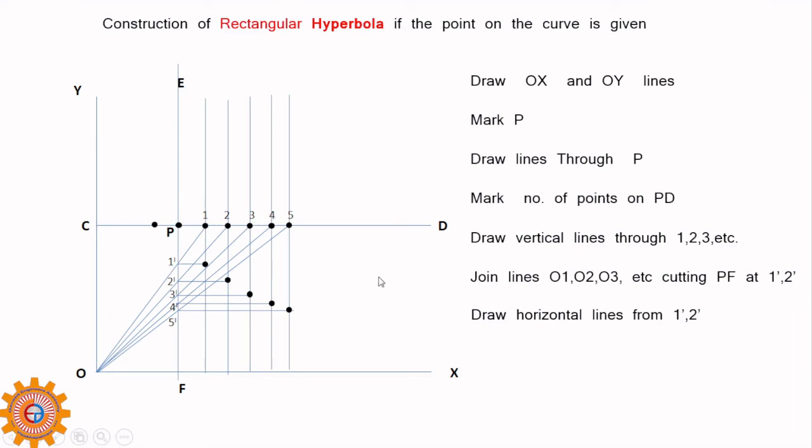I have taken extra point 6 and I have extended that, that will cut the PF that is PE at 6 dash. Draw horizontal and vertical lines, you will have that point. That is another point. Mark the points P1, P2, P3, P4, P5 and also P6.